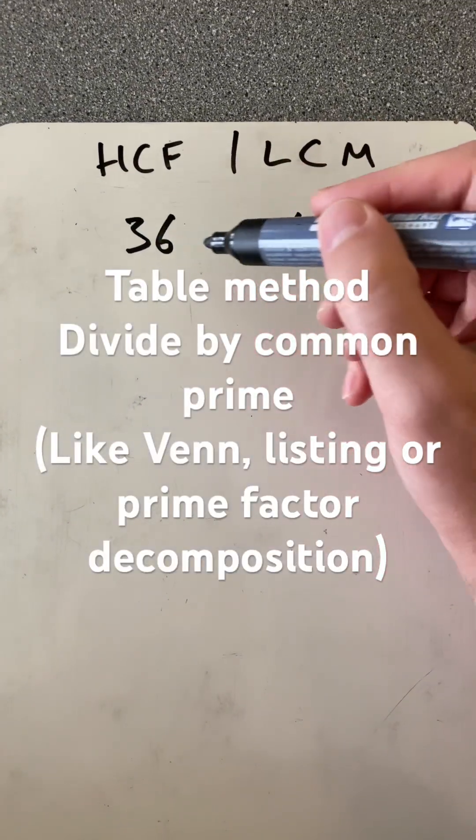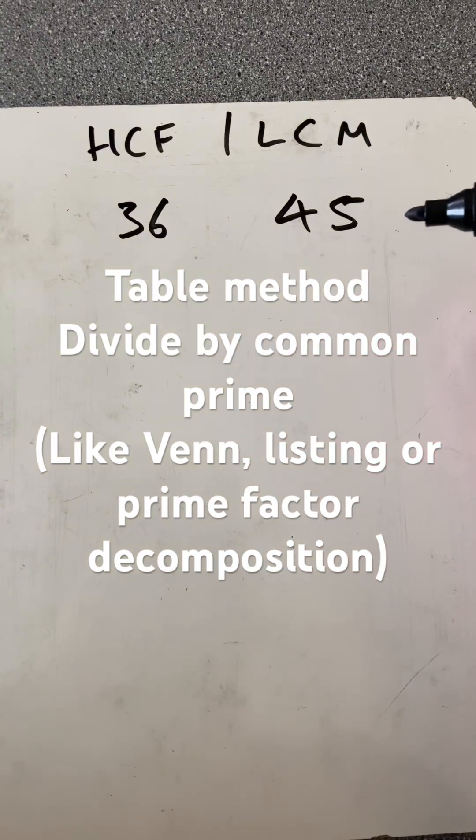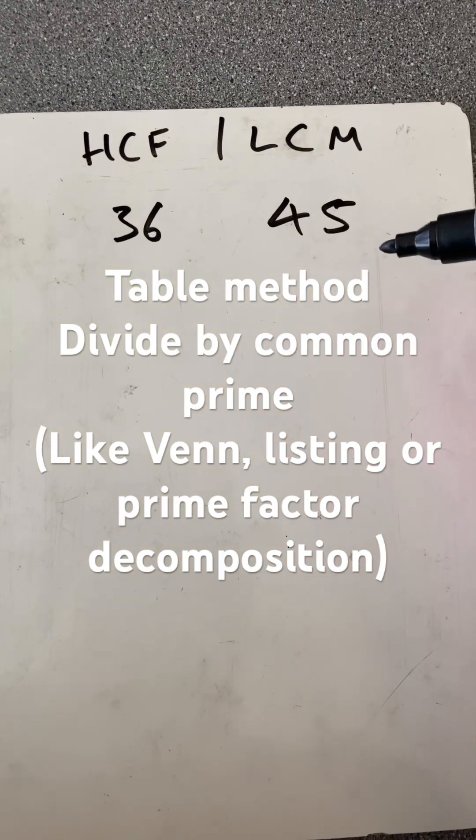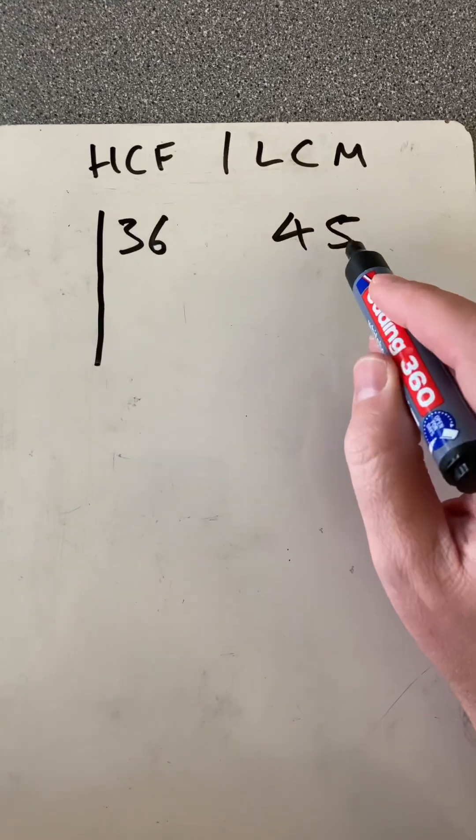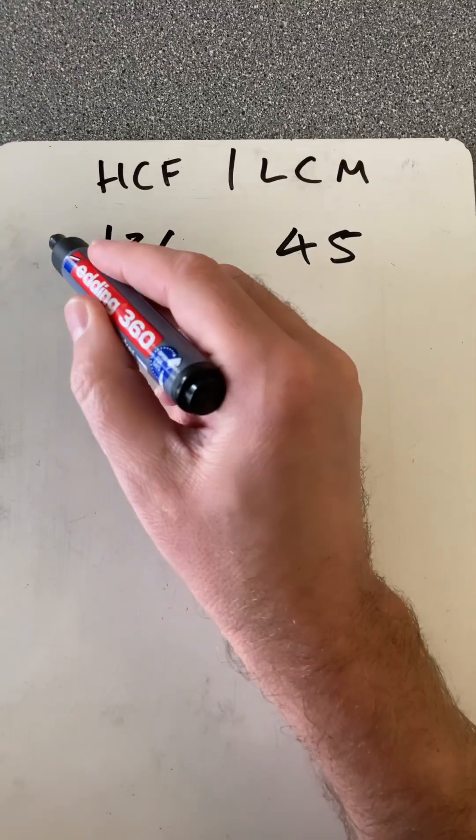We use similar things to the Venn diagram or listing or prime factor decomposition because I'm going to divide by the lowest common prime. They're both multiples of 3.